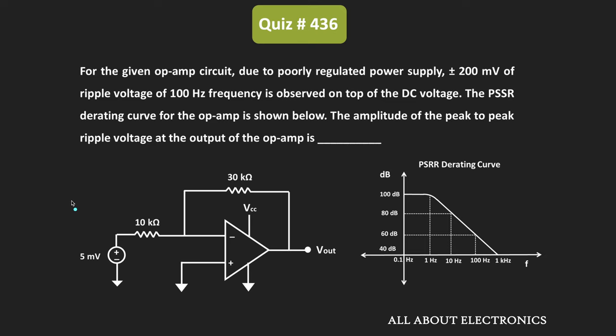In this question, we have been given this open-based circuit. Here we have been given that because of poor regulation, the supply voltage has a ripple of ±200 mV, and the frequency of the ripple is equal to 100 Hz. That means this ripple will appear on top of this supply voltage.